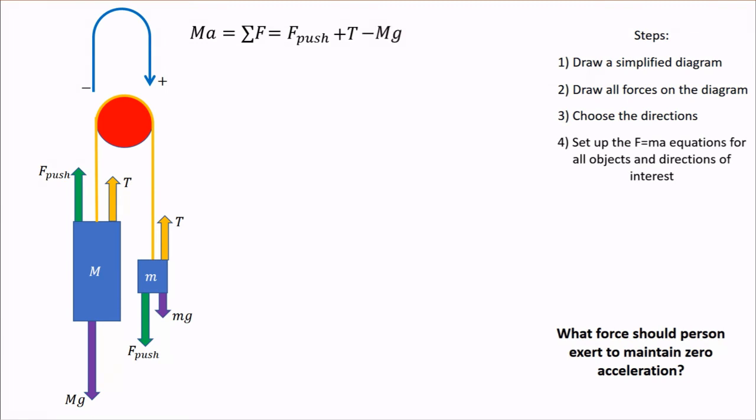Now for the rope. We have little m times A equals the sum of forces. Again, let's start with those positive terms, which in this case is any force that acts downward. So we have the F push plus little m times g. Tension acts upwards, so it's negative. So we put minus T into the equation.